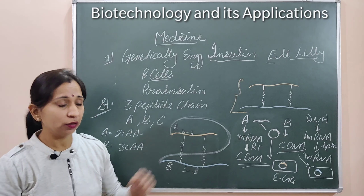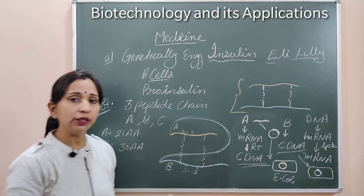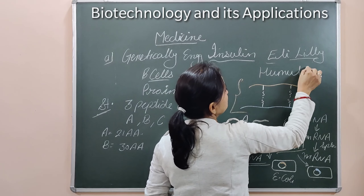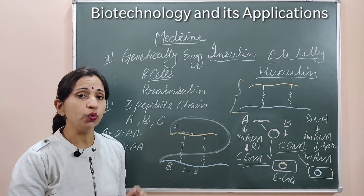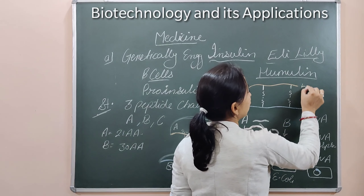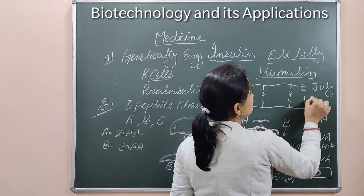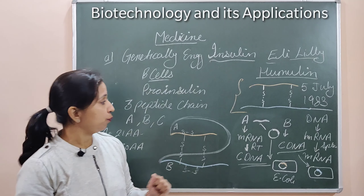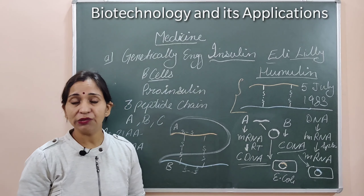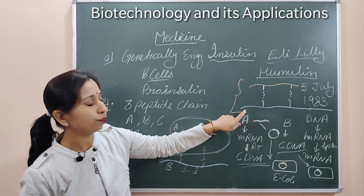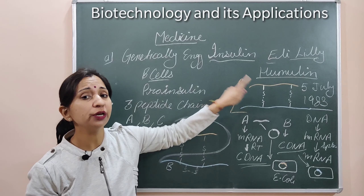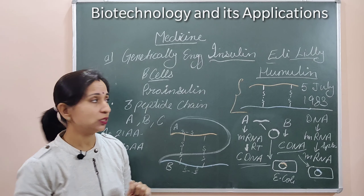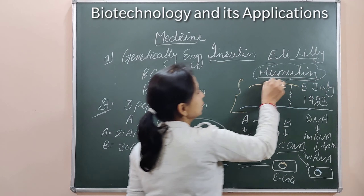This company introduced this insulin, and the name given to this insulin is Humulin. This insulin, known as Humulin, was introduced on 5th July 1983. This date is also very important. On 5th July 1983, this recombinant genetically engineered insulin — Humulin — was introduced into the market.